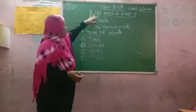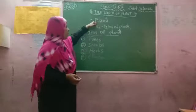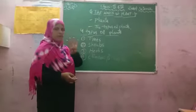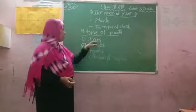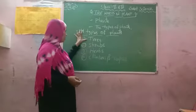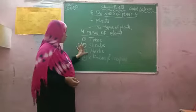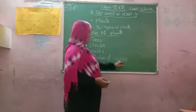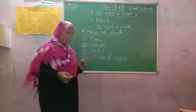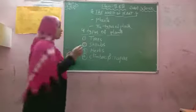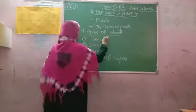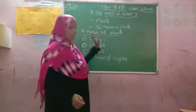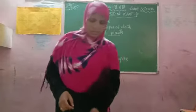The four types of plants are: trees, shrubs, herbs, climbers, and creepers. Today we will first talk about trees.